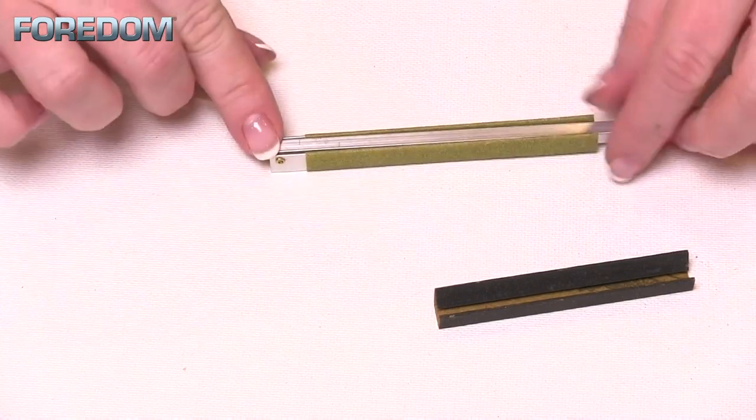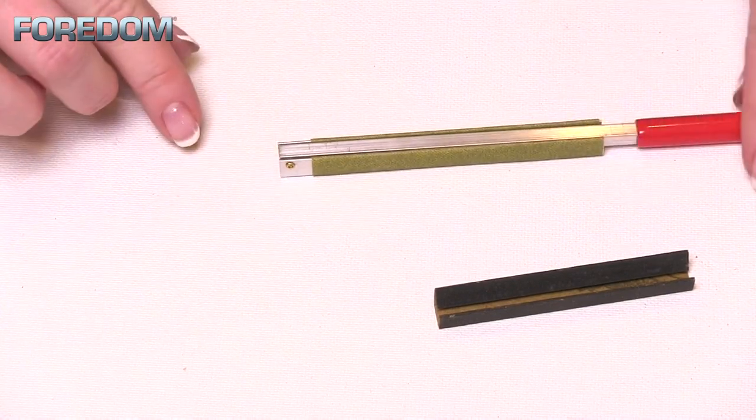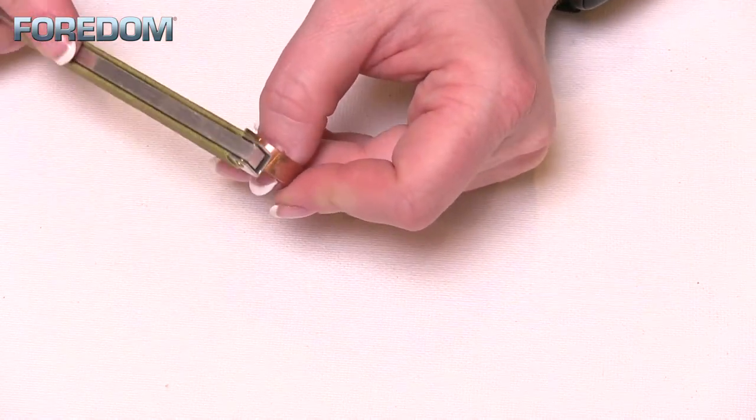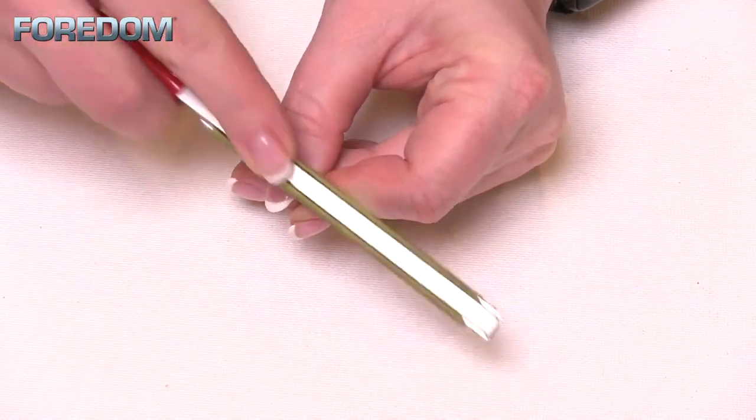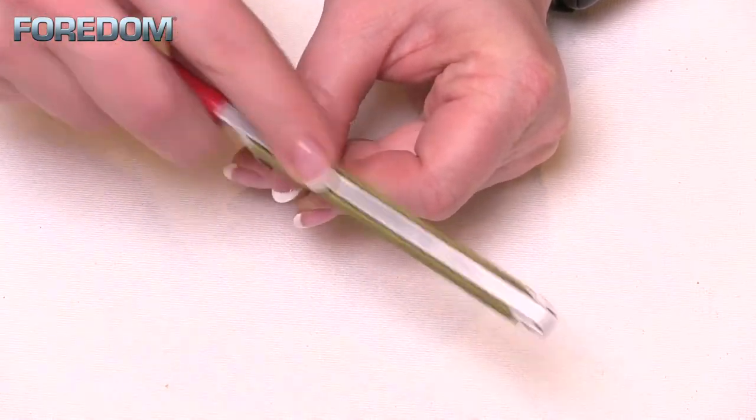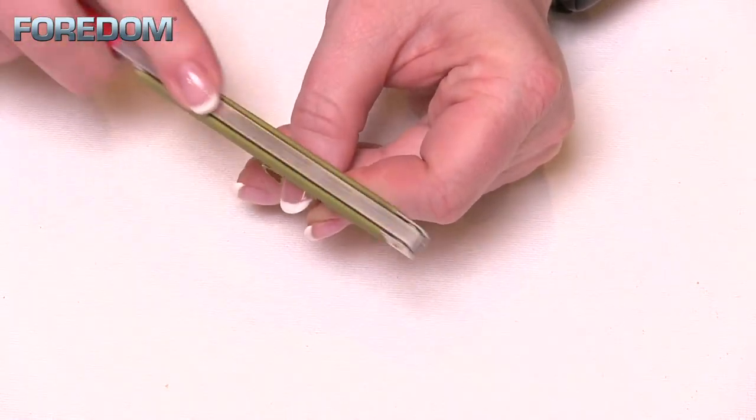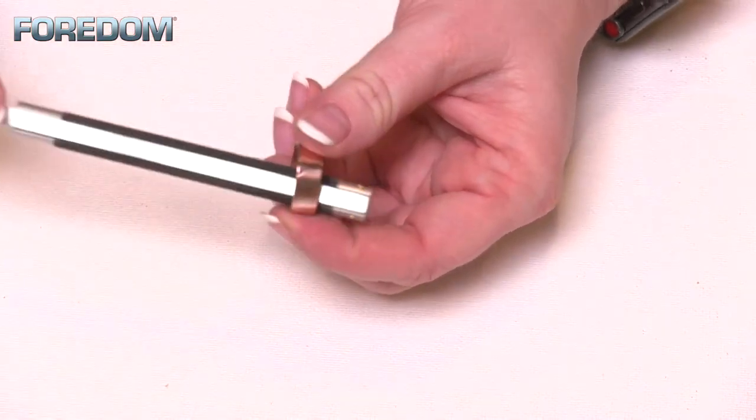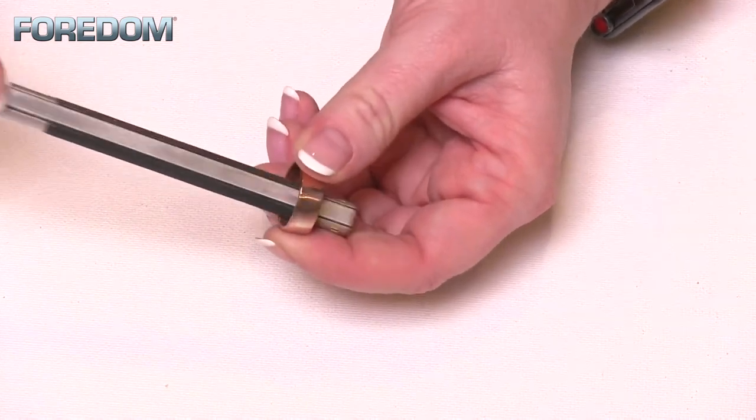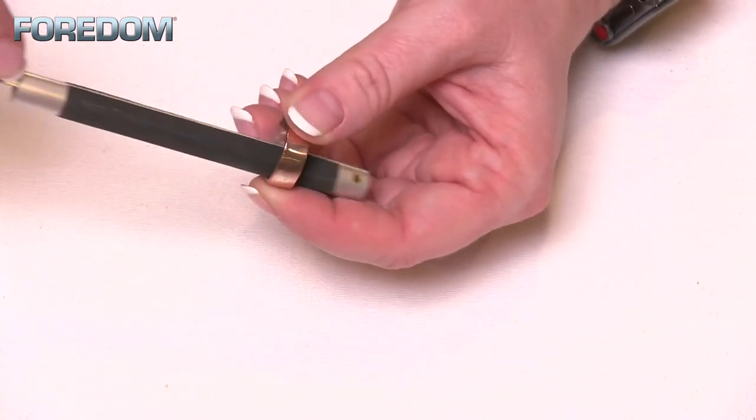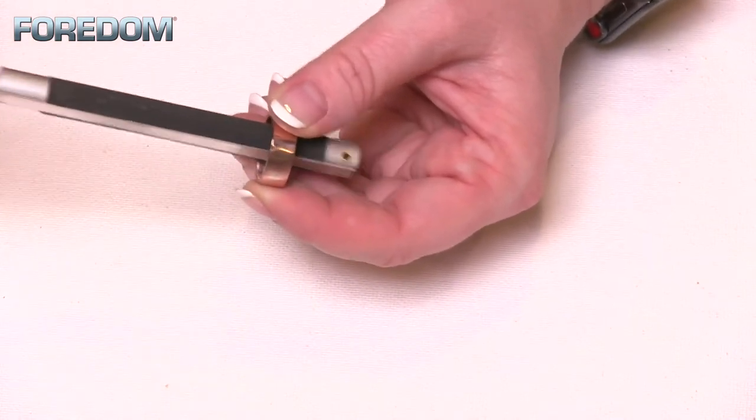Once your sanding film or sandpaper has been installed, the nice long handle makes it very easy to control your piece and give firm pressure onto the piece you're working with. The round also allows you to get into curved surfaces, say a ring or any other type of surface, making it easy to work around.